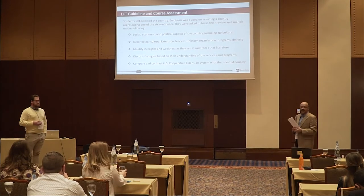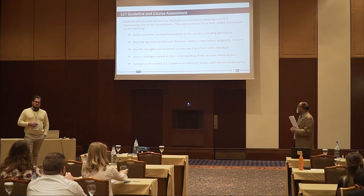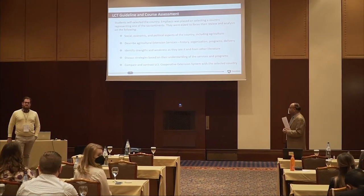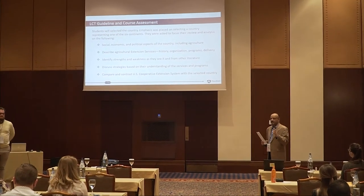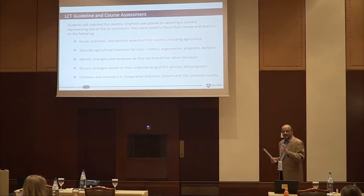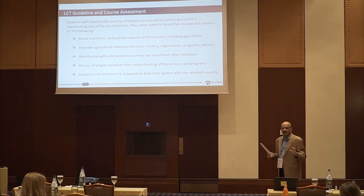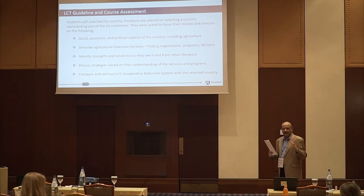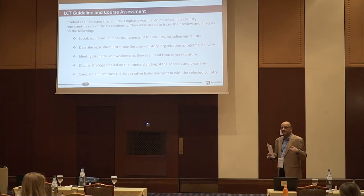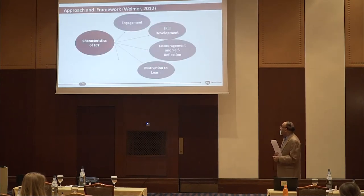There were five things I told them to look into: social, economic, and political aspects; agriculture extension services; and based on that information, they should be able to identify strengths and weaknesses. Then, using those findings and discussions, develop some strategies to see what possibilities exist to help and improve the programs. Finally, compare and contrast with the U.S. extension system and other extension systems in other countries so that we have a better understanding.